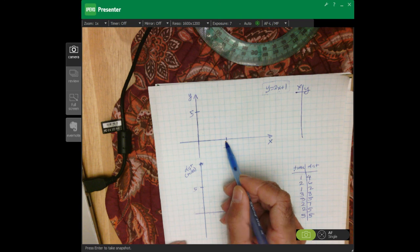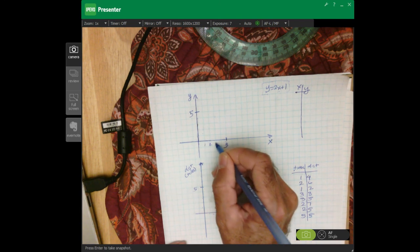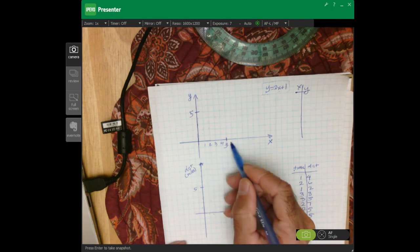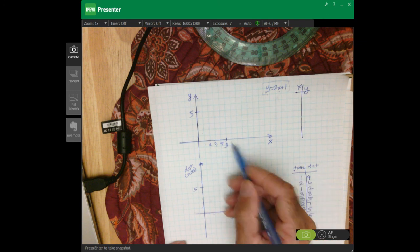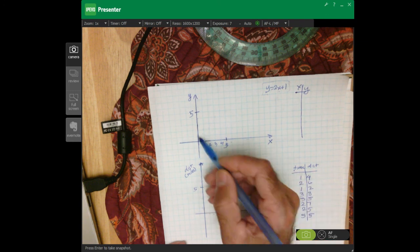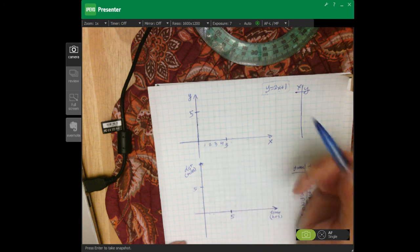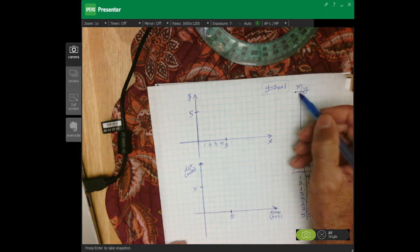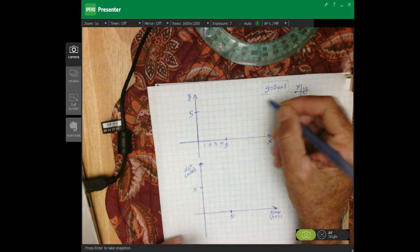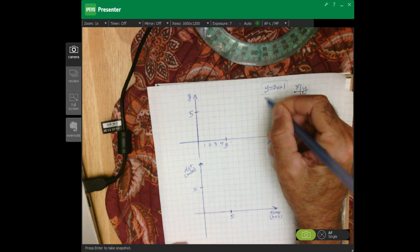I just have five down here, but that's one, two, three, four. So each one of these little tick marks, little boxes represents one. So we can find the points, find points on that line by plugging values in.